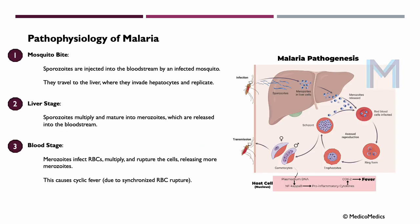Let's focus on the pathophysiology of malaria. It all begins with the mosquito bite — an infected Anopheles mosquito bites a human, injecting sporozoites into our bloodstream. These sporozoites then travel to the liver where they invade hepatocytes and begin to replicate. The sporozoites multiply and mature into merozoites, and when the liver cell bursts, these merozoites are released back into our bloodstream.